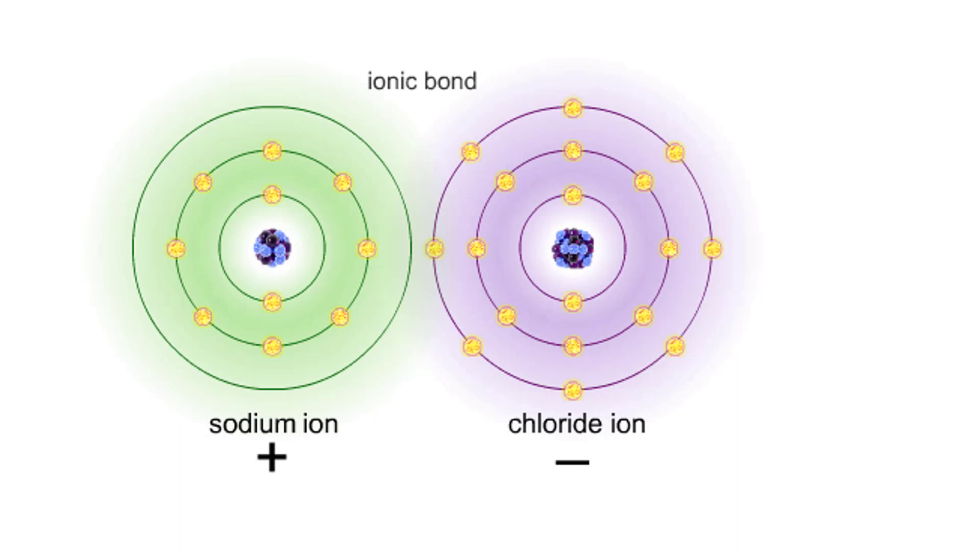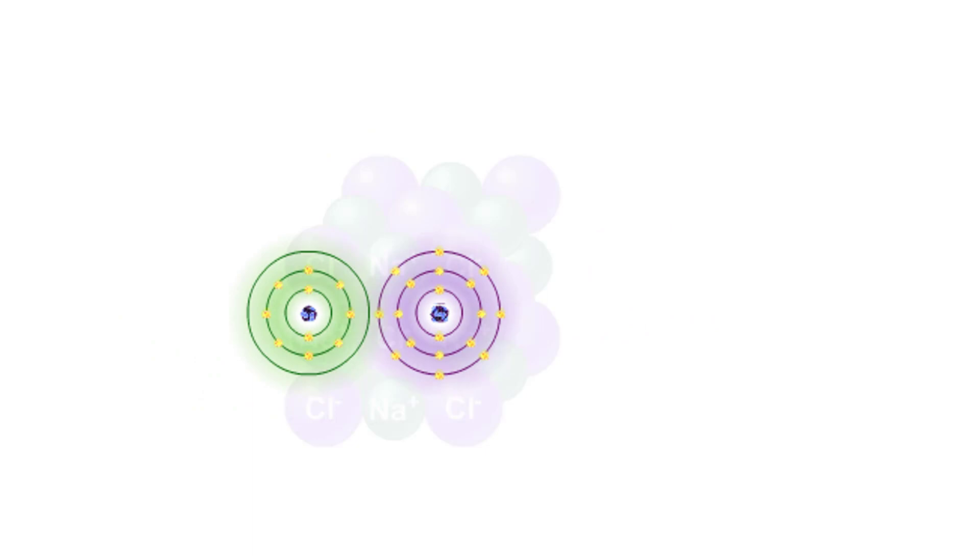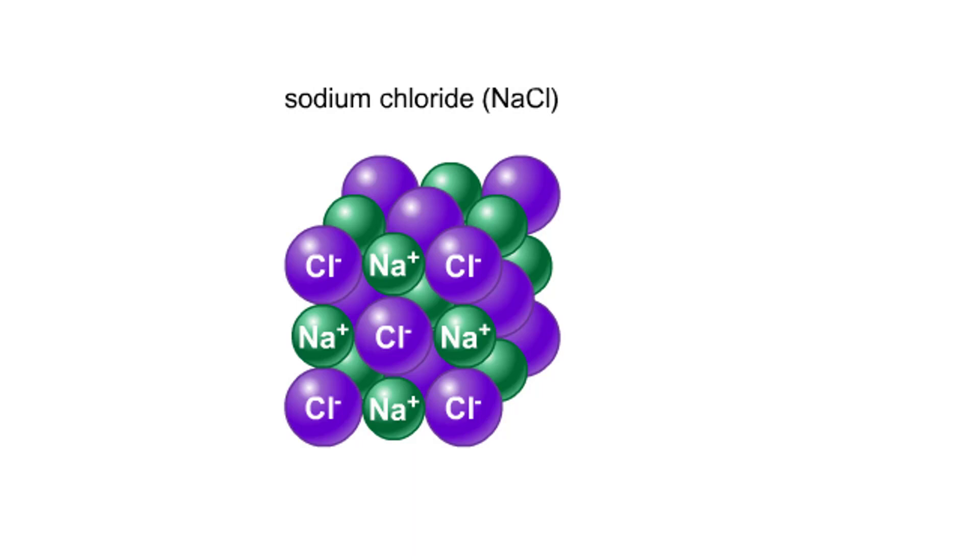You can observe the outcome of ionic bonding in a portion of a crystal of table salt, or sodium chloride. In such crystals, sodium ions and chloride ions interact through ionic bonds.